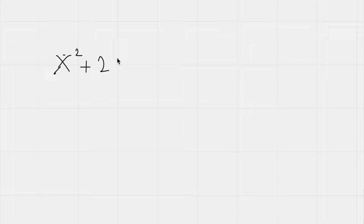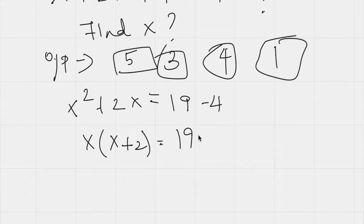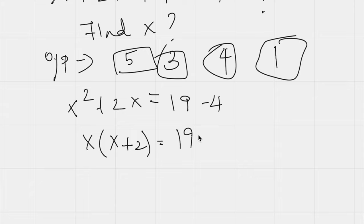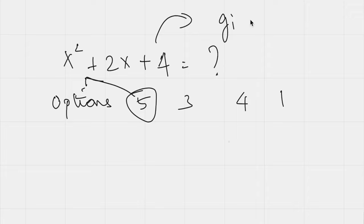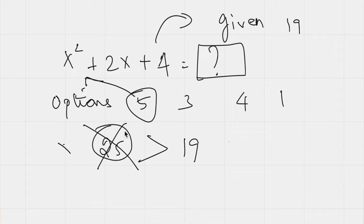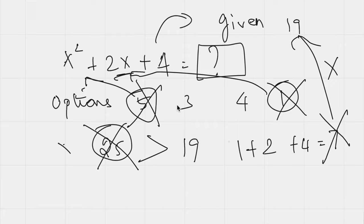The next trick is simplification. You simplify a value, find a common factor, and divide. Since in aptitude you have a multiple-choice format, you can substitute the answer choices into the equation to check which value is correct. That way you avoid lengthy derivations and save time.